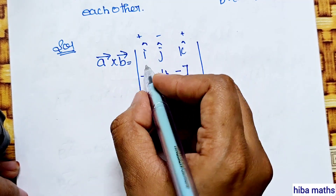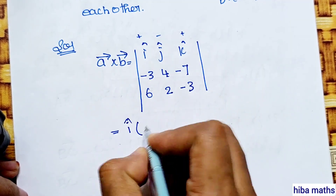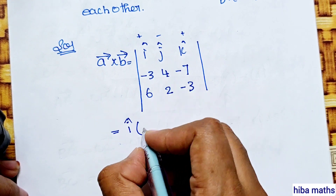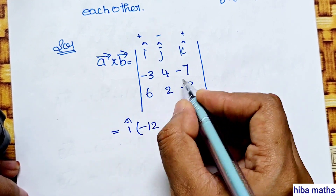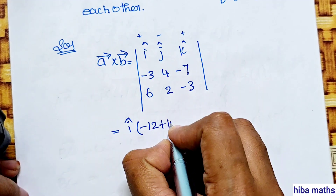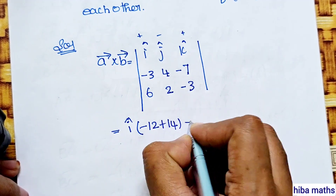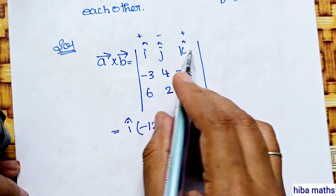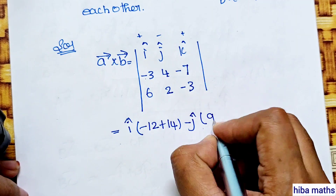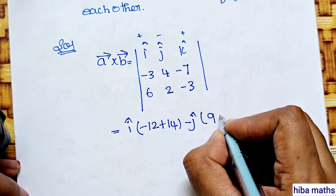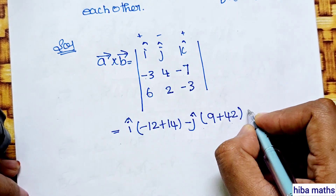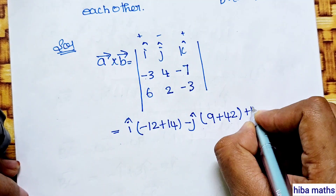I vector first: i into 4 into minus 3, then minus 12; 2 into 7, 14 minus 14, then plus 14. Minus j into first row second column: 3 times 3 is 9; minus into minus plus; 6 times 7 is 42, minus 42. Minus k, first row last column, minus 6, minus 24.